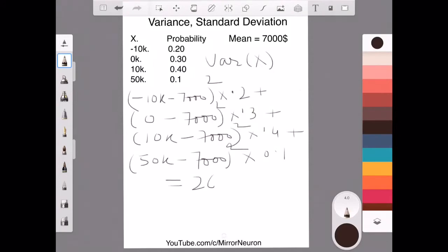50k minus say $7,000 again whole square times 0.1 and if we calculate this, this comes around 261,000,000. It is a very, very big number. The reason being here we are calculating things in dollar, but here it became square dollar which doesn't make any sense because we are taking square of those values. So, the unit becomes square dollar.